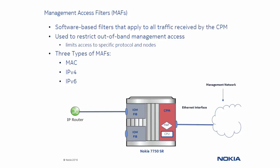Let's talk about another type of filter that can restrict packets being received out-of-band on the CPM Ethernet interface. Management access filters, or MAF, is a software-based filter that applies rules to allow management traffic only from authorized IP addresses. Management access filters apply to packets from all ports, including the management Ethernet port. These filters can limit the out-of-band management of the router to specific protocols and nodes, thus protecting against out-of-band threats.